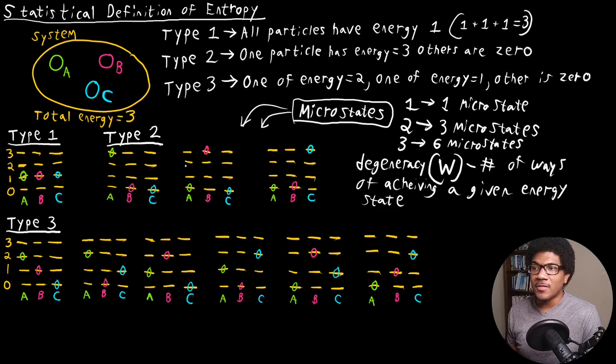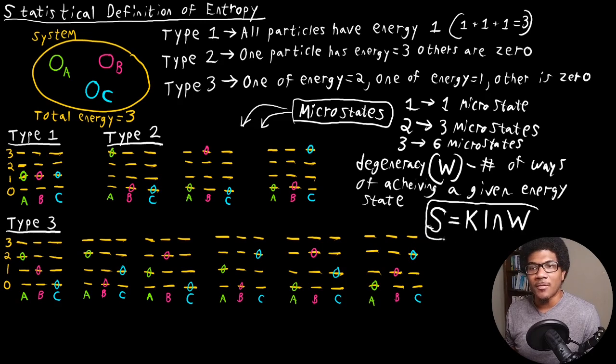So what the statistical definition of entropy is really based on is how much degeneracy you have in a given configuration. The higher the degeneracy, the higher the entropy. And it's governed by the Boltzmann equation, which basically says that the entropy is going to be equal to k, the Boltzmann constant, times the natural log of the degeneracy. So the natural log of W. This is the Boltzmann equation for entropy. So basically, the higher the degeneracy, the higher the entropy.